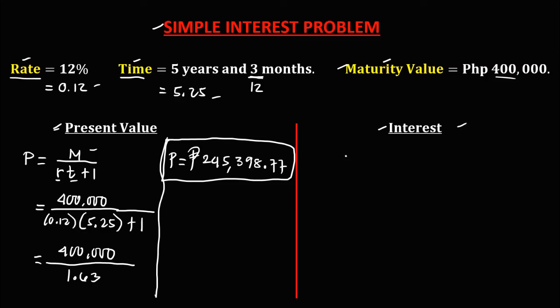Then for the interest, the interest is equal to the maturity value minus the present value. The maturity value is 400,000 minus the present value 245,398.77.